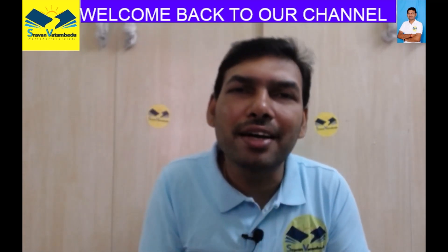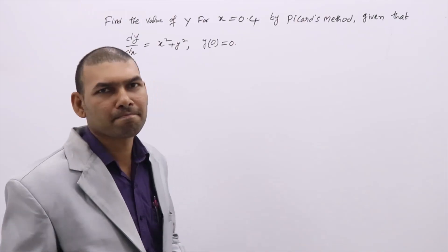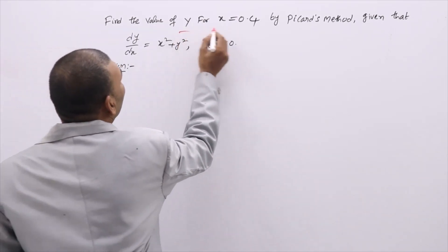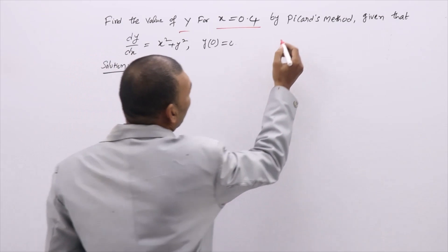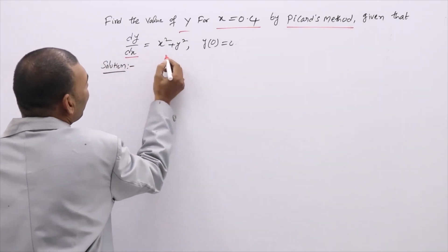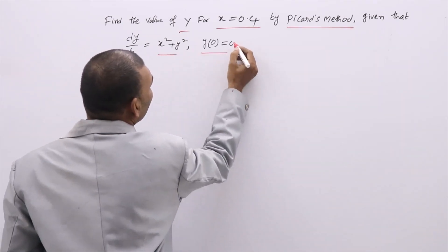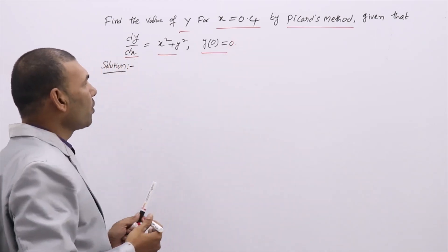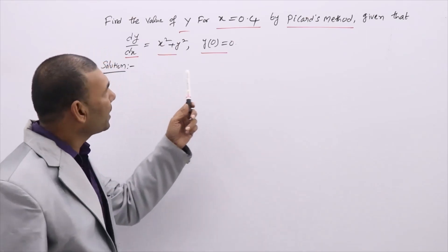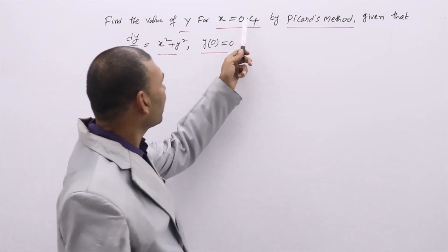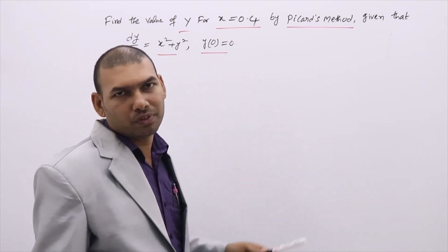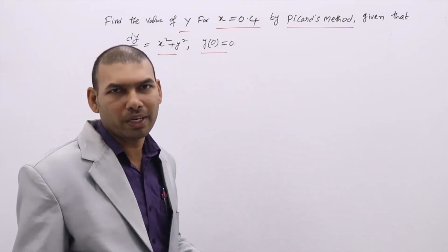In this video lecture, we are going to discuss: find the value of y at x equal to 0.4 by Picard's method, given that dy/dx equals x squared plus y squared and initial condition y(0) equal to 0. So we need to use Picard's method to evaluate y at x equal to 0.4.